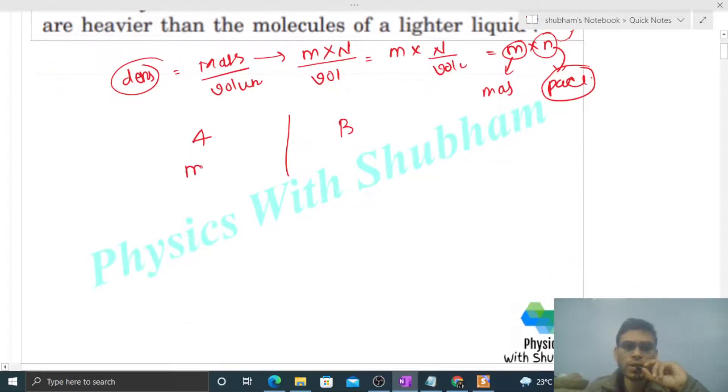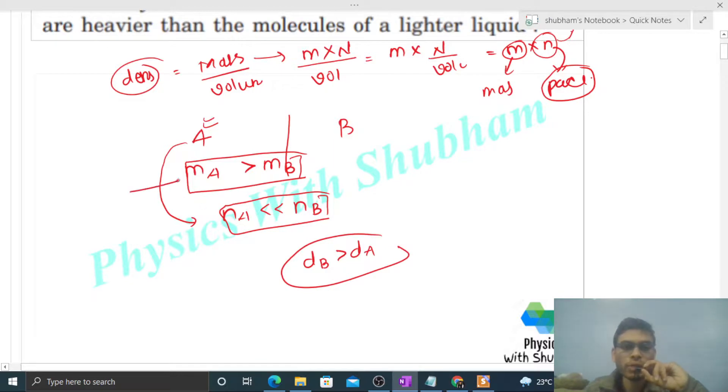If mass of one molecule of liquid A is greater than mass of one molecule of liquid B, but the packing is much less, then even though mA is higher, its density can still be lesser. So this statement is not correct.